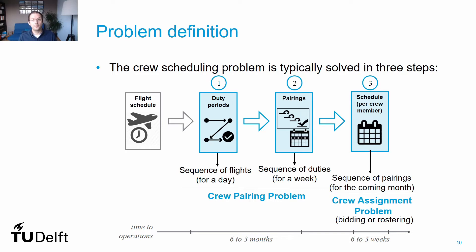The following step is to produce pairings, combining these many duty periods into pairings of several days that respect all regulations and labour agreements. This can vary in length from 4 to about 10 days. If you can easily have thousands of duty periods, we can have thousands of thousands of pairings possible, even for a medium-sized airline. Because the flight schedule is usually fixed for each week in a given season, the crew pairing problem can be solved 6 to 3 months in advance.